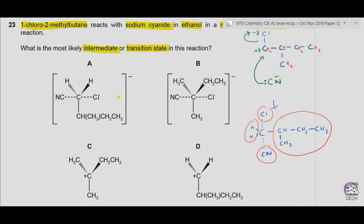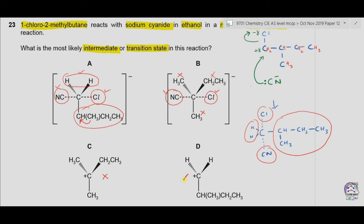Looking at the transition state options: in A we have two hydrogen atoms, one CN, one chlorine, and an alkyl group in which the second carbon has CH₃ — this matches our structure. In B we have Cl, CN and two CH₃ groups attached, which is wrong. Options C and D both show a carbocation being formed, which is incorrect for SN2. The only correct option is A.